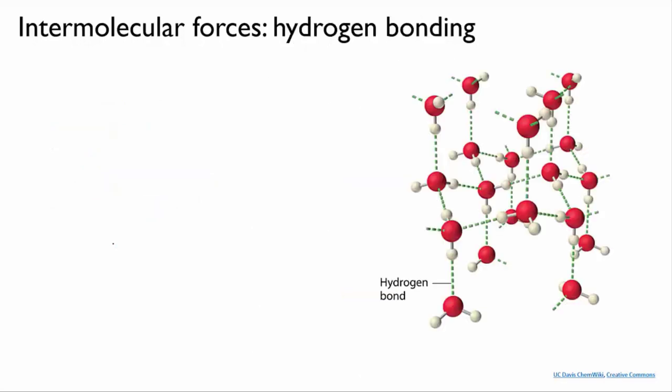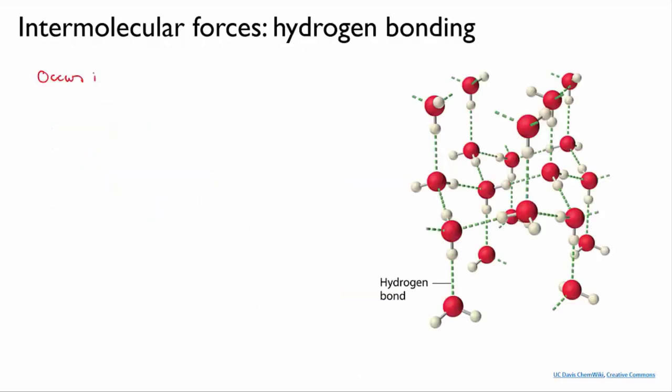Lastly, we have hydrogen bonding. This is an even stronger form of dipole-dipole forces. It occurs in molecules that have H-F, H-O, or H-N bonds. These are the most polar covalent bonds that you can make.